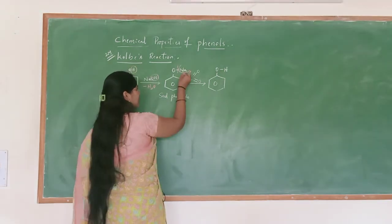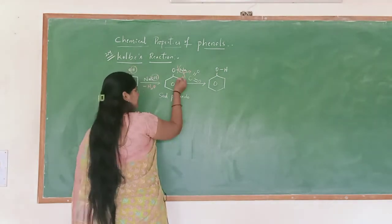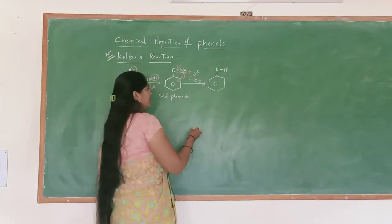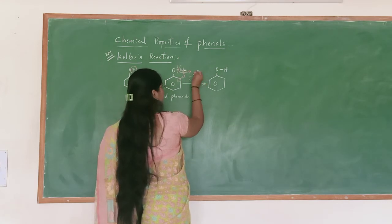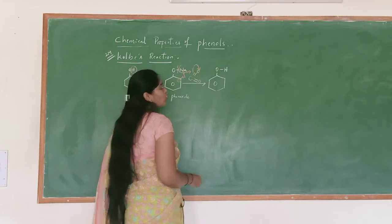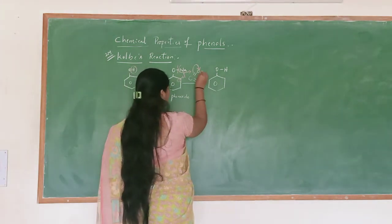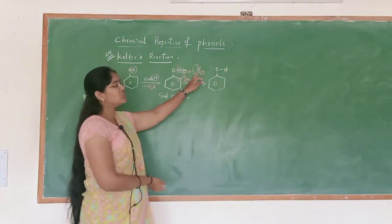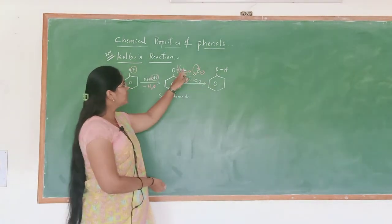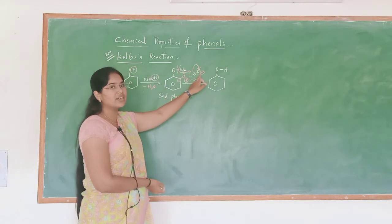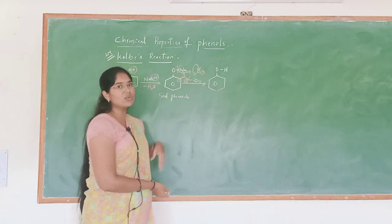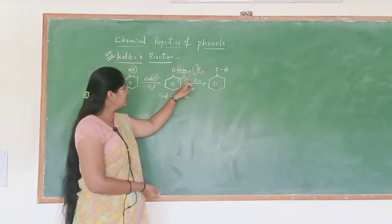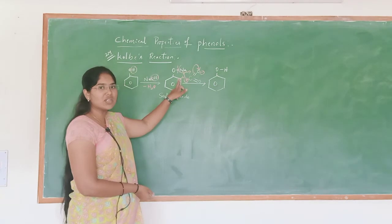From here sodium is eliminated. In the place of sodium, ortho hydrogen is added. We know hydrogen always eliminates as H+. Thereby this carbon may be having a negative charge. Simultaneously, the pi bond present between the oxygen and carbon moves to oxygen. Then this oxygen gets a negative charge and this carbon gets a positive charge.